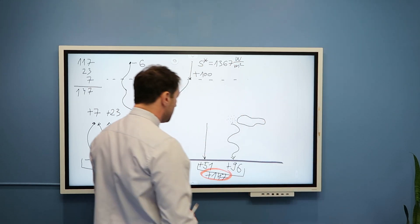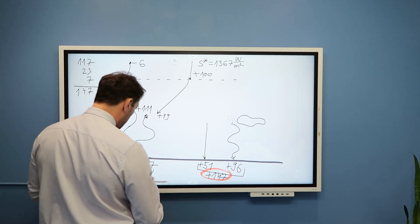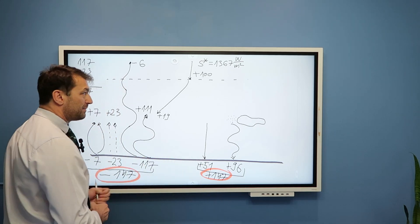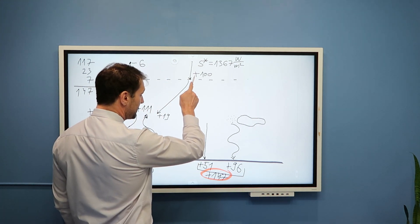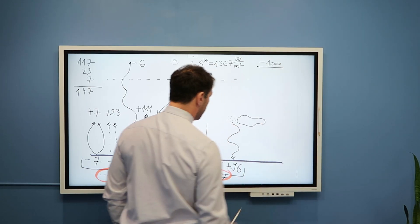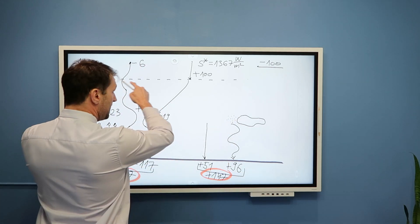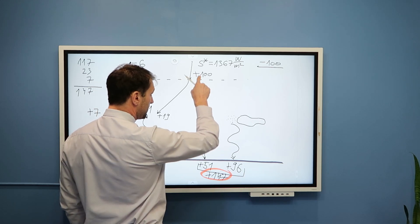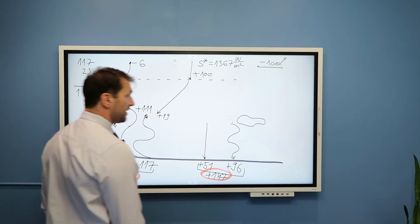You might say: okay, you convinced me the energy budget is satisfied at the Earth's surface. But at the end of the day, if we received 100 units, we have to lose 100 units. In other words, demonstrate to me that the energy budget at the top of the atmosphere shows plus 100 units reaching the top and negative 100 units leaving the top of the atmosphere.